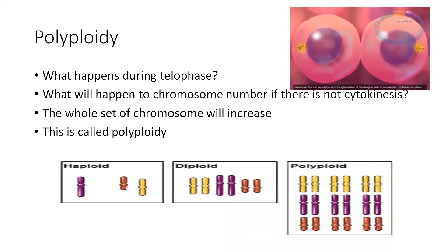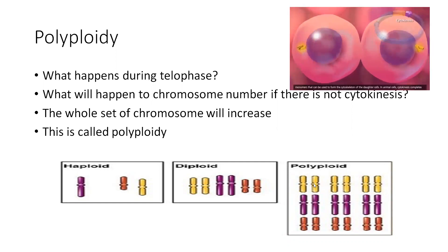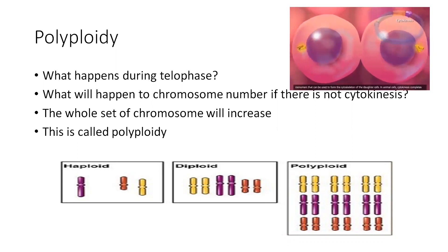In polyploidy, all three single chromosomes — or all sets of chromosome pairs — are multiplied. Polyploidy is more common in plants, not in animals.